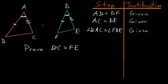If we start with two triangles — triangle ABC and DFE — and we know that side AB is equal to side DF, and AC is equal to DE, and also this angle BAC is bigger than angle FDE, what we're trying to prove is that base BC is bigger than base FE.